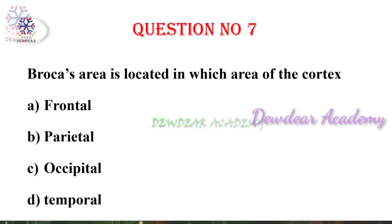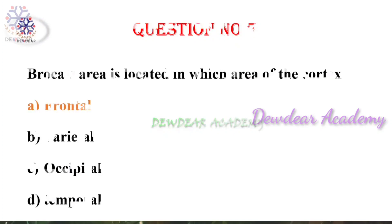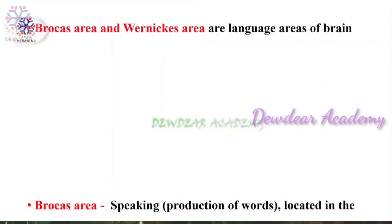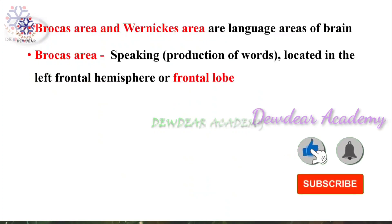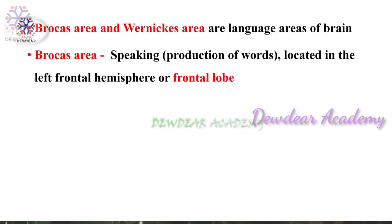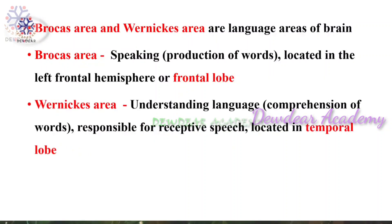Question number seven: Broca's area is located in which area of the cortex — options: frontal, parietal, occipital, temporal. The right answer is frontal. There are two language areas of the brain: Broca's area and Wernicke's area. Broca's area is concerned with speaking — production of words — and it is located in the left frontal lobe. Wernicke's area is associated with understanding of language.